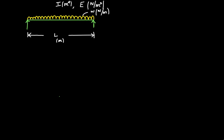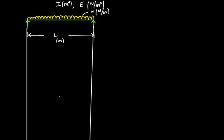I will draw these two lines — my shear force diagram here and my bending moment diagram here. So this is going to be my SFD and this is going to be my BMD. The first step to draw the shear force and bending moment diagram is to find the reactions at the supports.